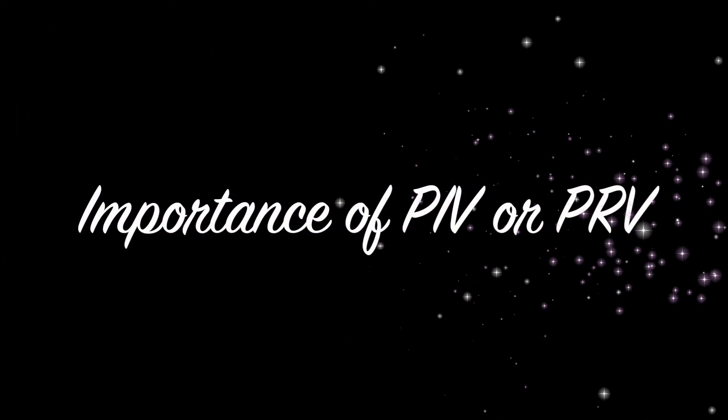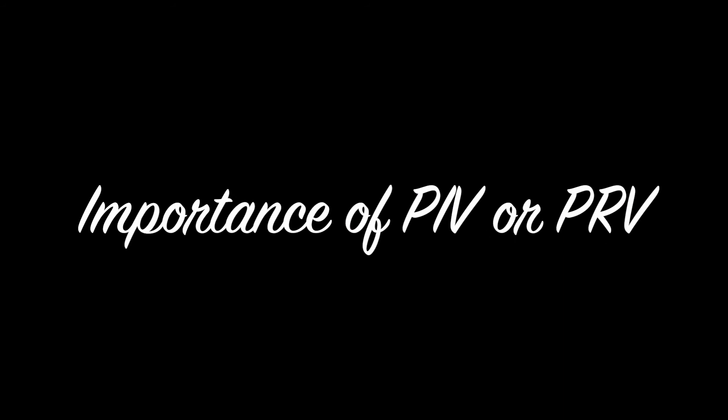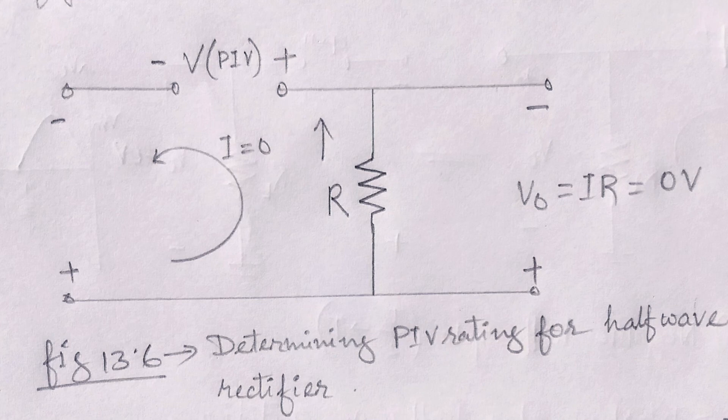Now, we will see the importance of peak inverse voltage or peak reverse voltage in the rectification process. Peak inverse voltage is the voltage rating that must not be exceeded in the reverse bias region. Otherwise the diode will enter the Zener avalanche region.